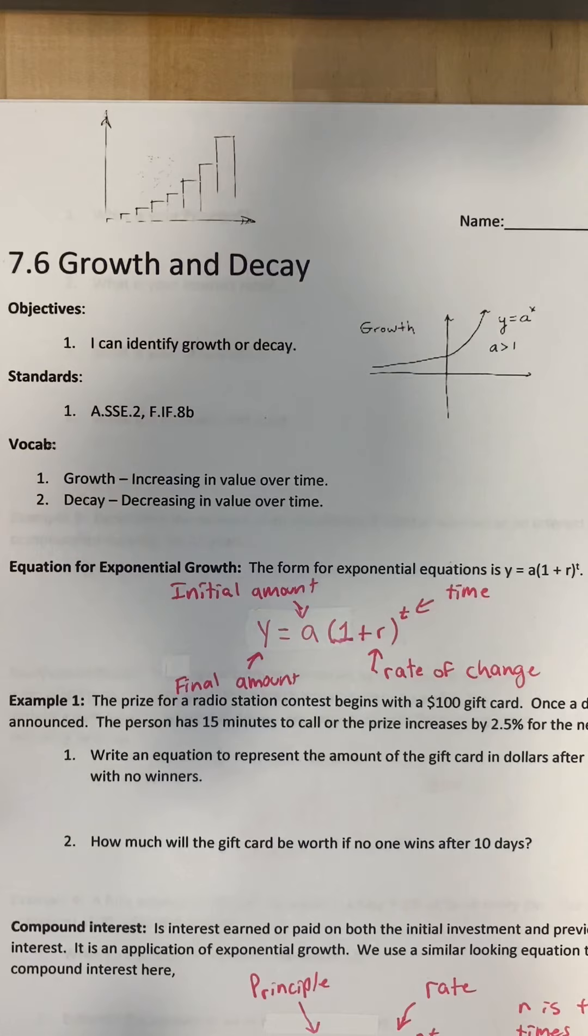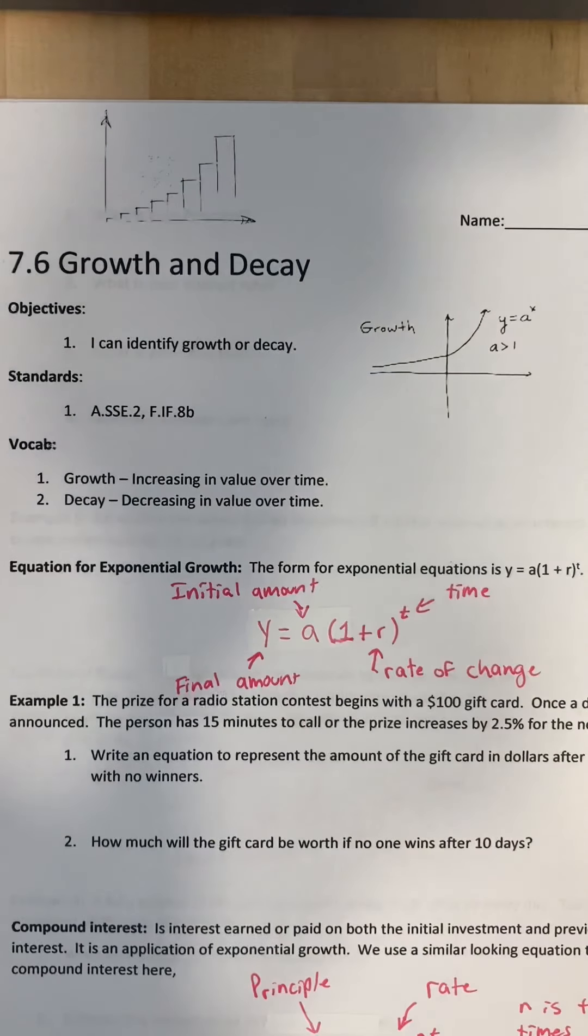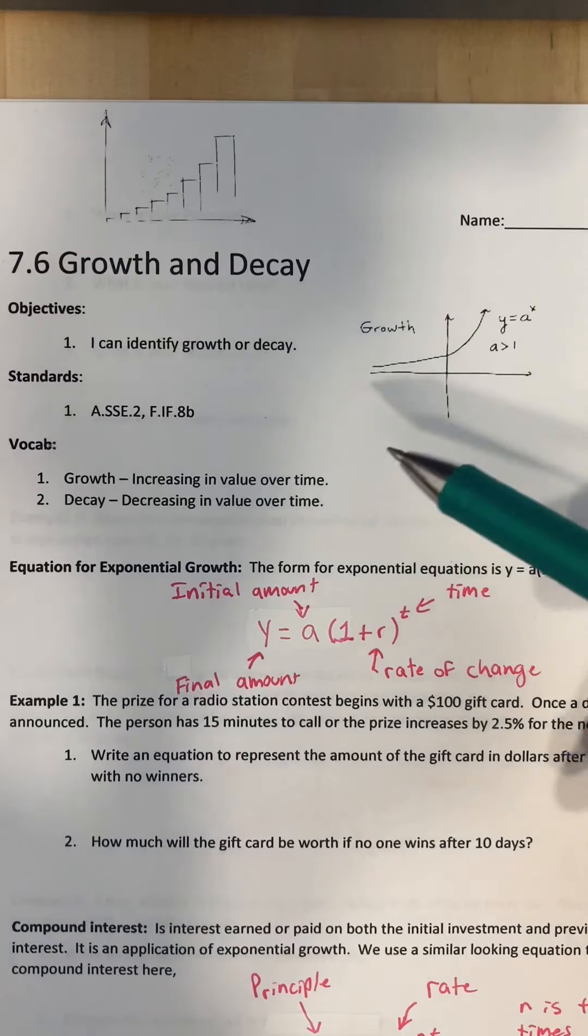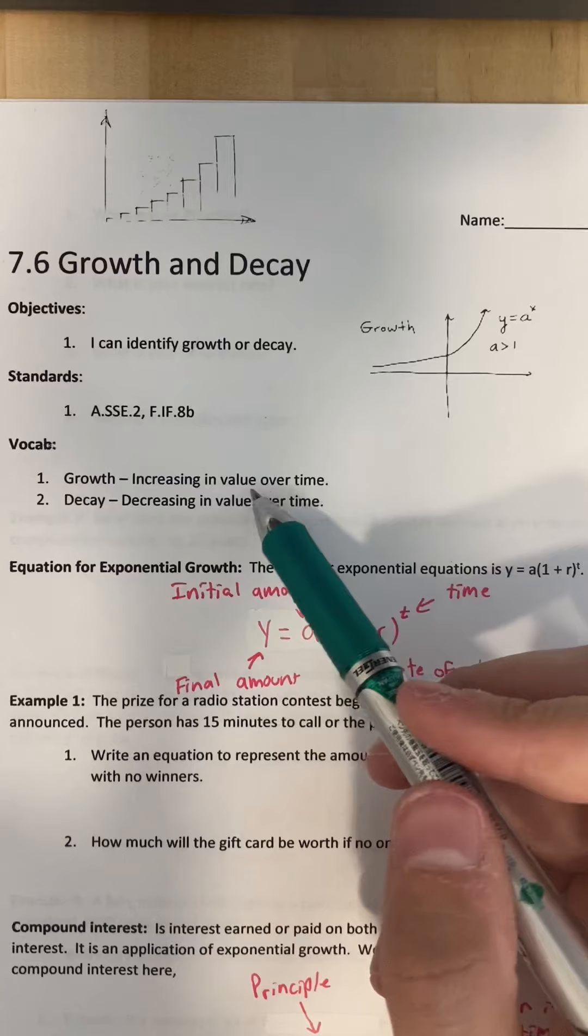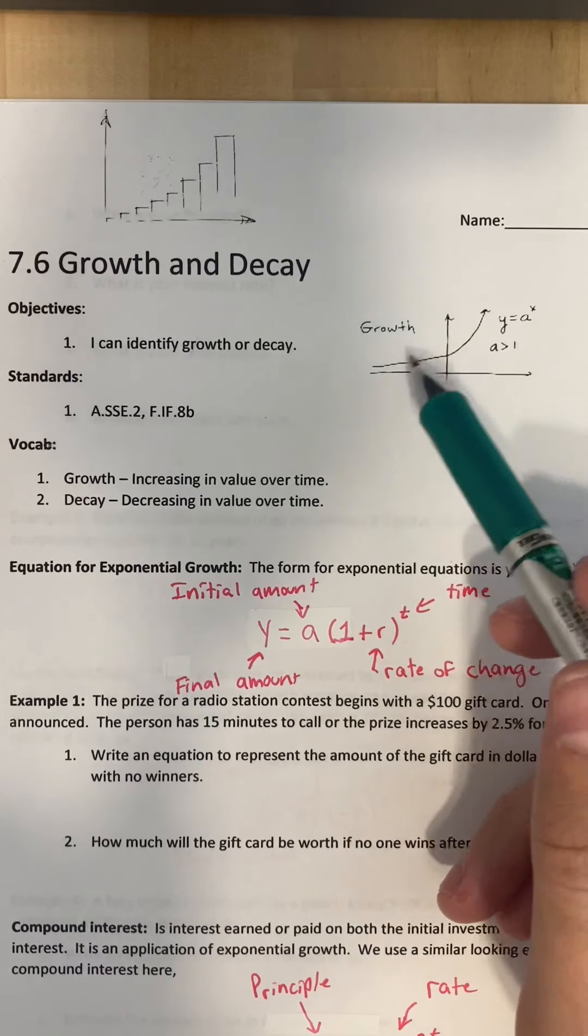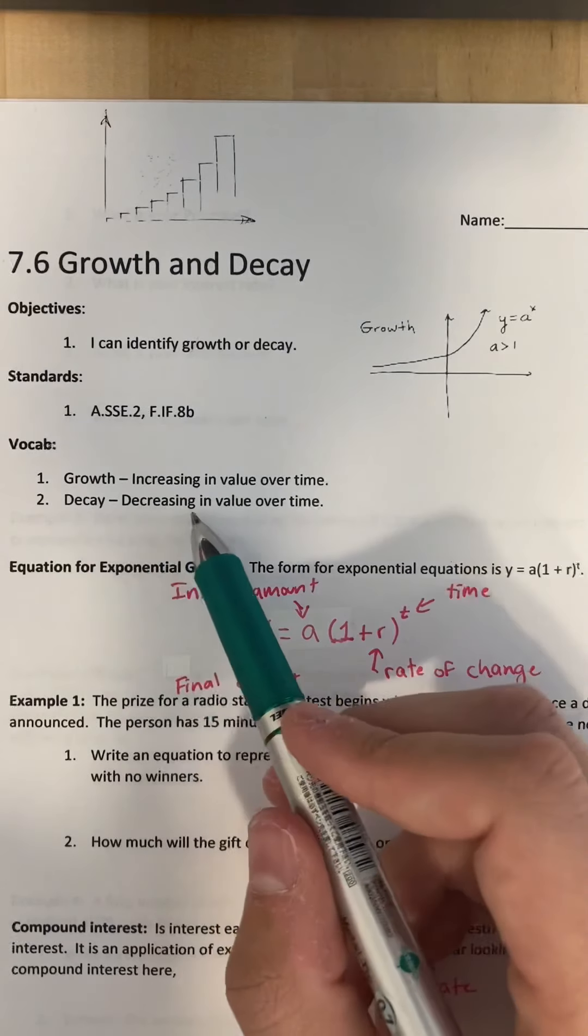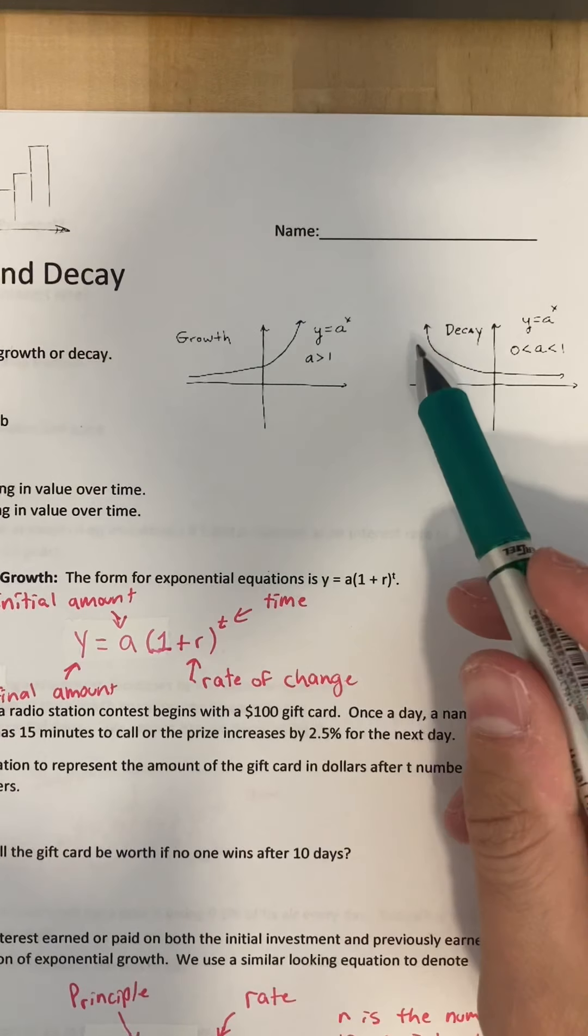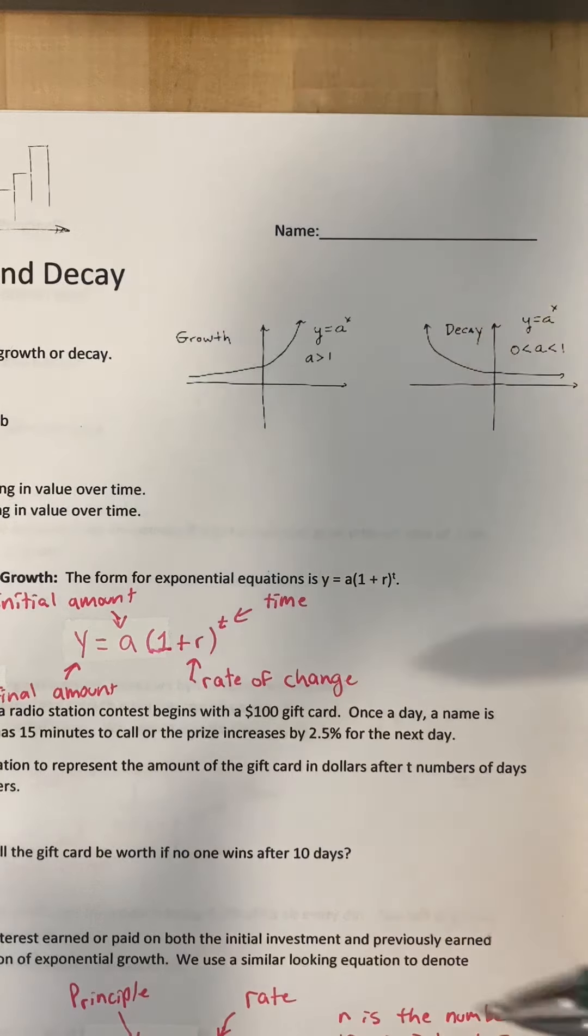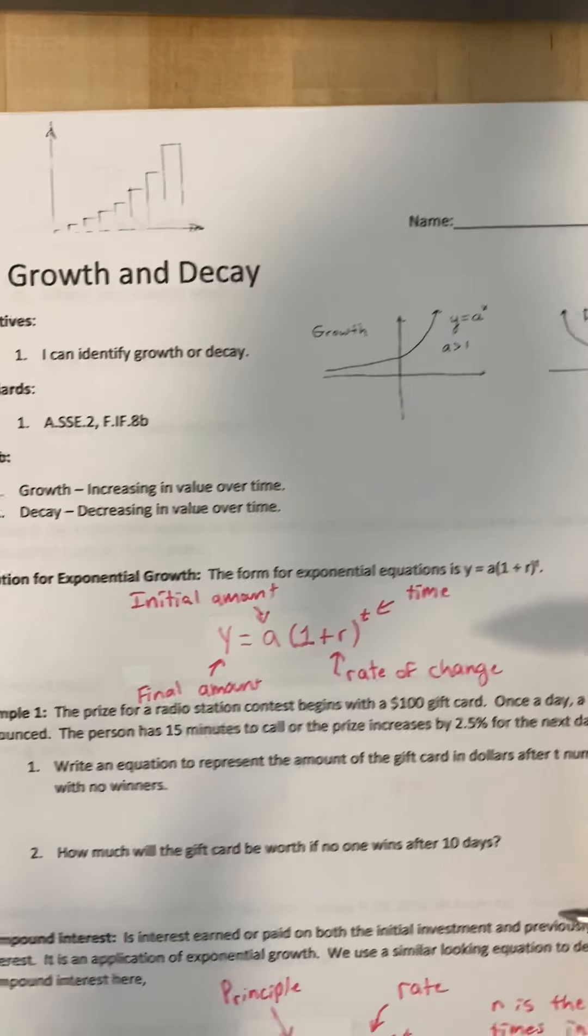Hey guys, welcome to growth and decay. It's going to be a continuation of exponential functions. We're just going to look at specific examples when we have growth versus when we have decay. Growth is anything that is increasing in value over time. This would be an example of growth. Decay is going to be decreasing in value over time. So this one, see how it's going down over time. That's growth and decay for you in a nutshell.